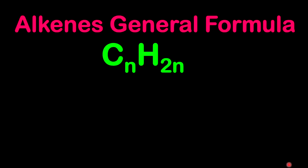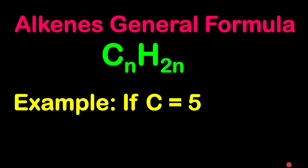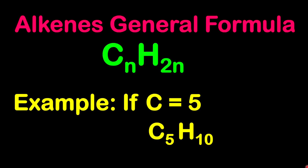Let's apply the general formula with an example. If the number of carbons is 5, the number of hydrogen atoms would be 10 — so it's C5H10. Because it has 5 carbons, it is known as pentene.